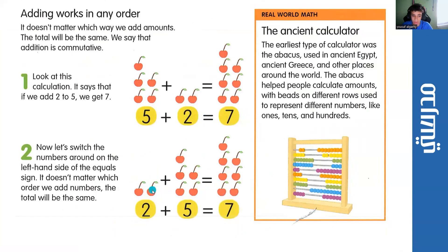1, 2, 3, 4, 5, 6, 7. 2 plus 5 equals 7, and 5 plus 2 equals 7.